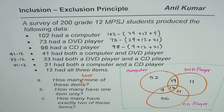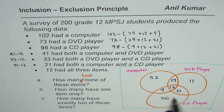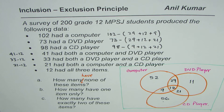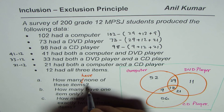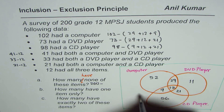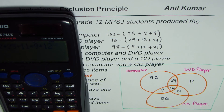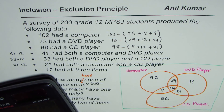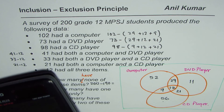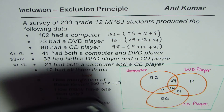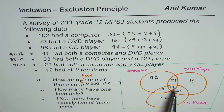In total, there are 200 students. We add up all the values in the diagram: 52 plus 29 plus 11 plus 9 plus 12 plus 21 plus 56, which equals 190. So 200 minus 190 gives us 10. There are 10 students who have none of these items.